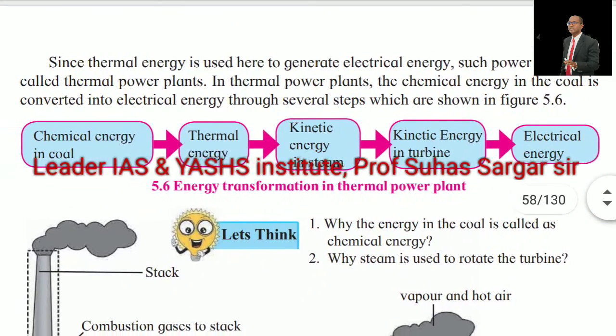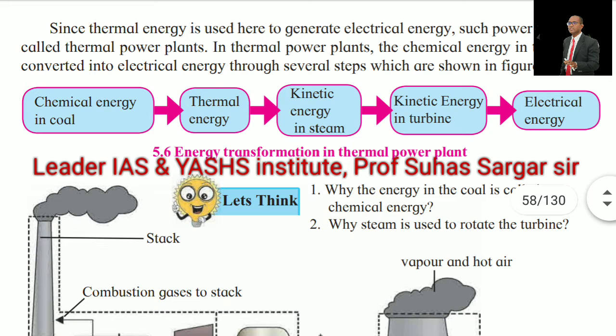Such power plants are called thermal power plants. In a thermal power plant, the chemical energy in coal is converted into electrical energy through several steps. Energy transformation: chemical energy in coal → thermal energy → kinetic energy in steam → kinetic energy in turbine → electrical energy.